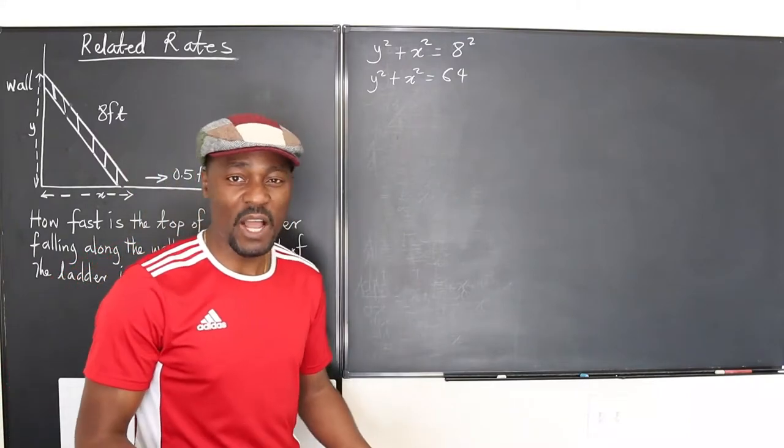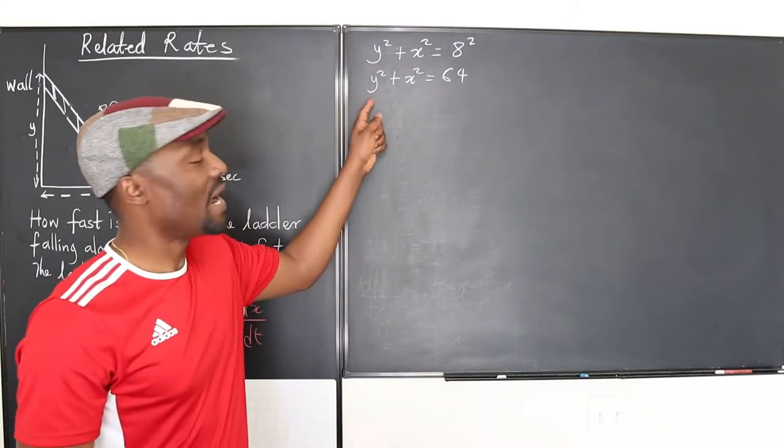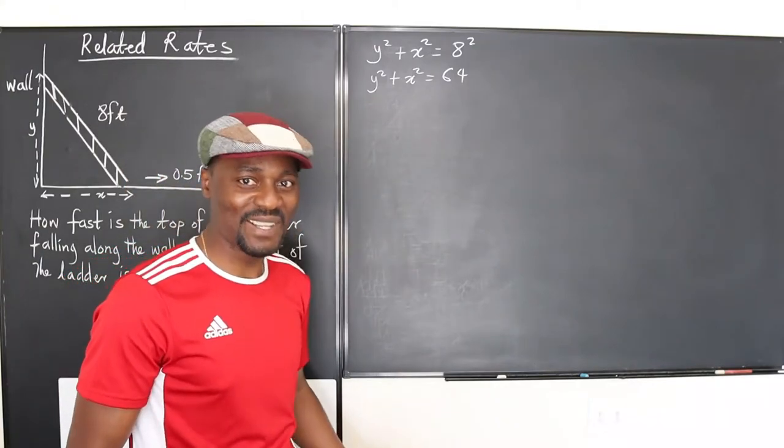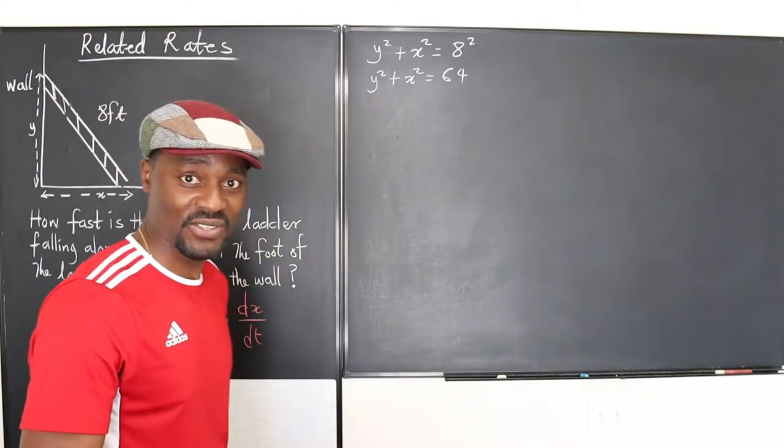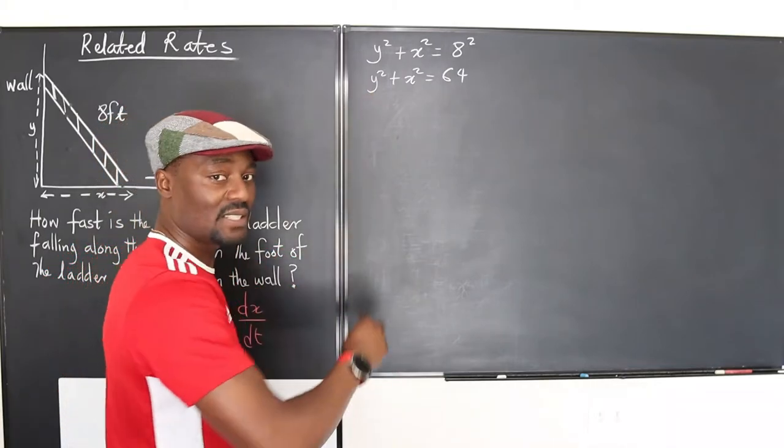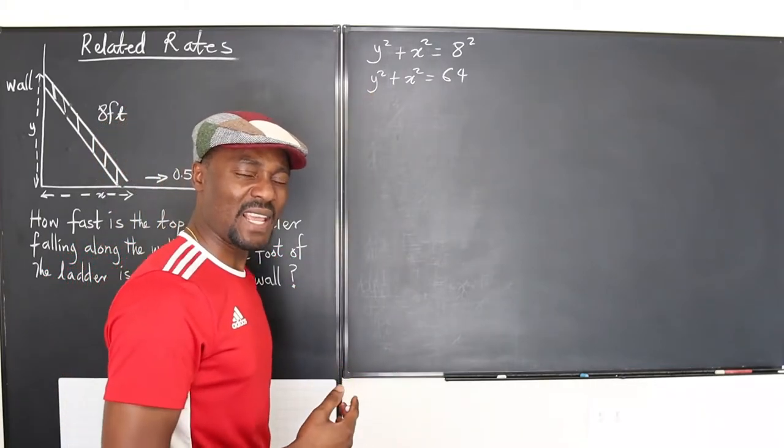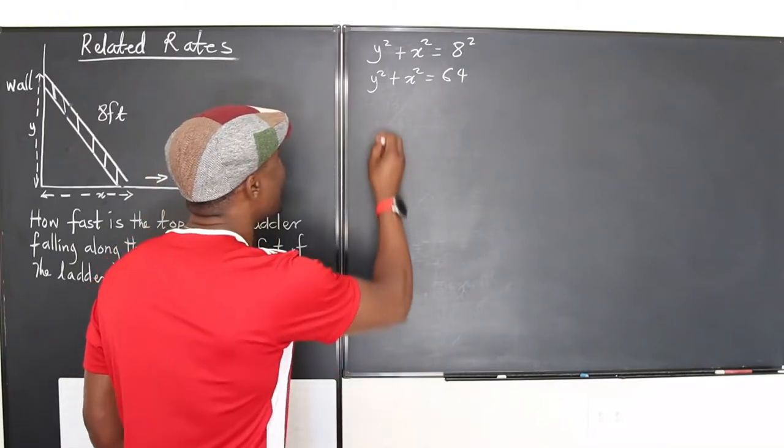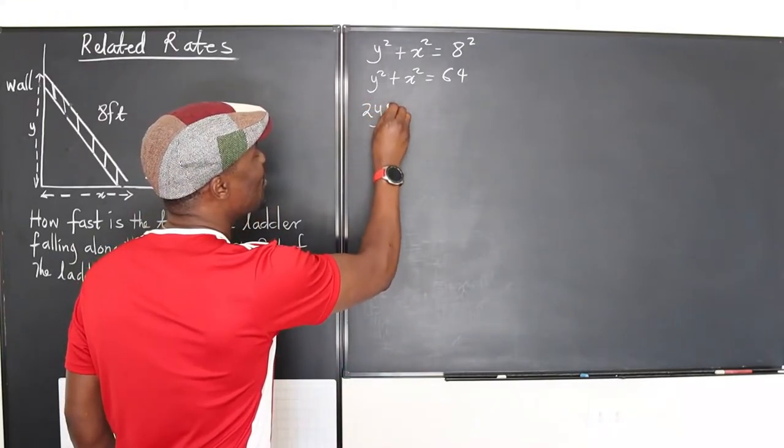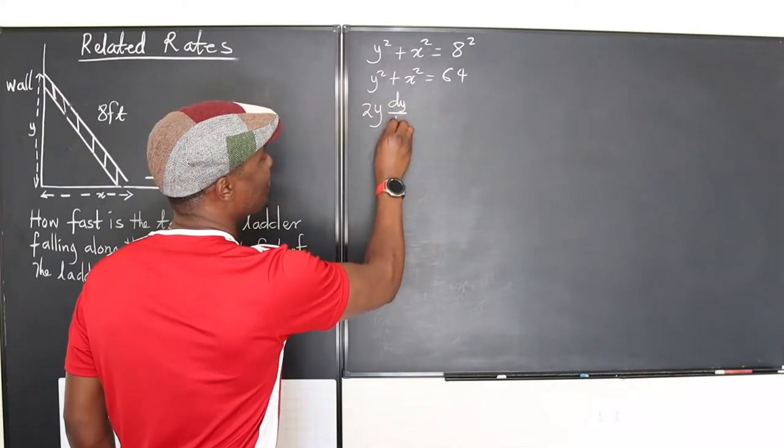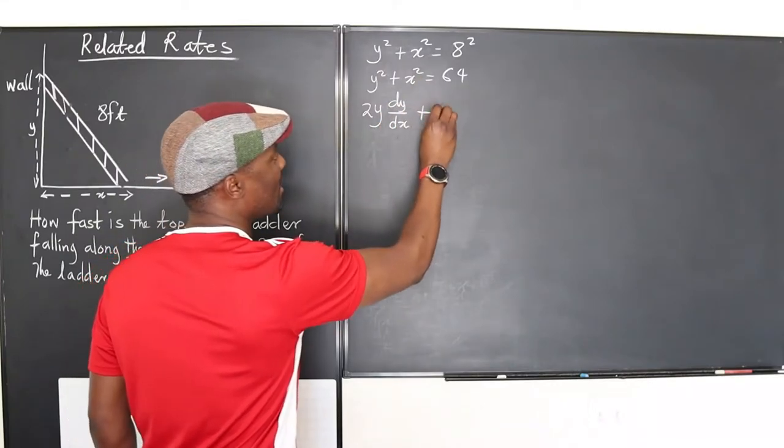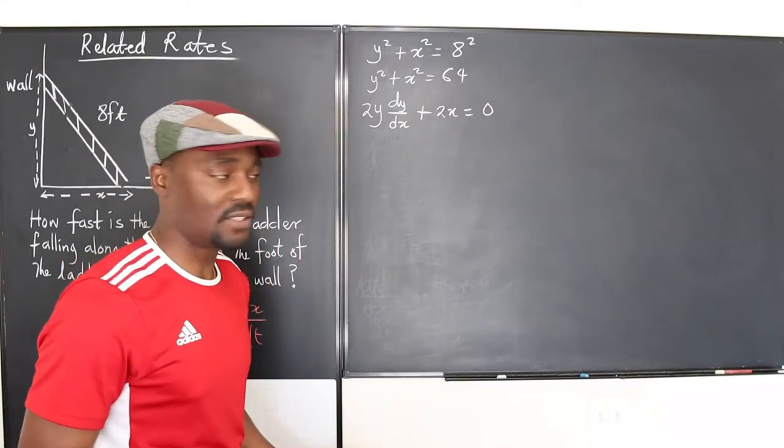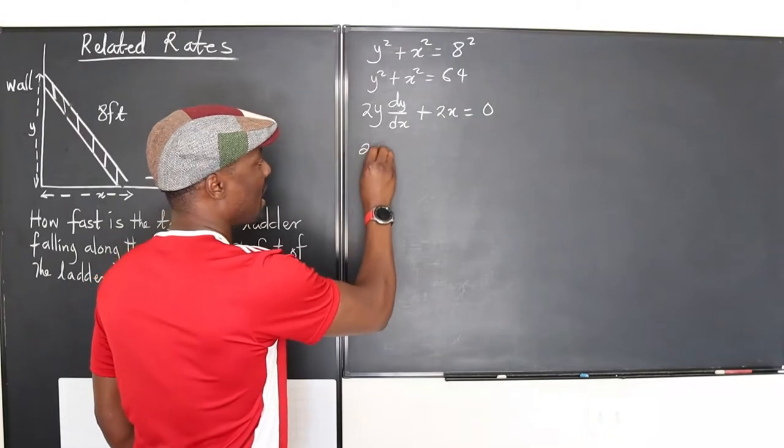Now I want to find dy/dx. I'll just differentiate. This y is not isolated. I will not spend time trying to isolate it because I can use implicit differentiation. I'm going to differentiate this implicitly. So that will be 2y dy/dx plus this is going to be 2x, and this would be 0. To differentiate a constant you get a 0.